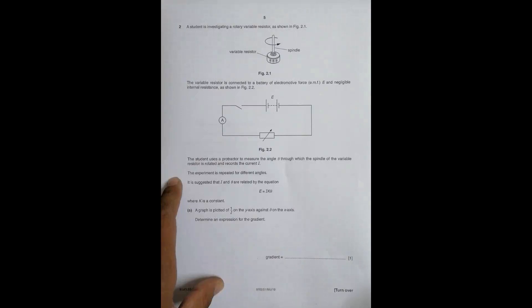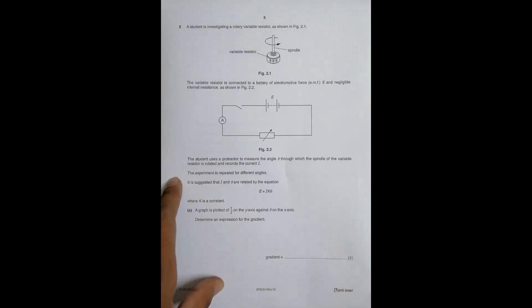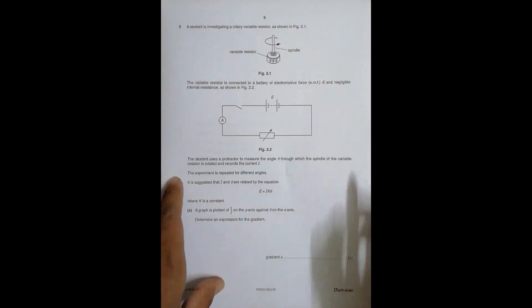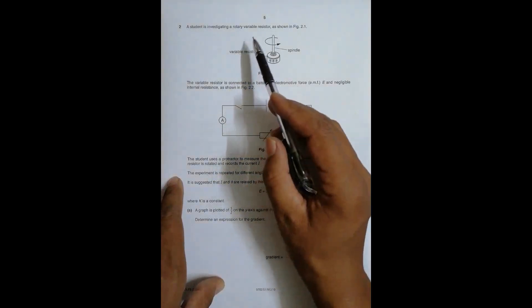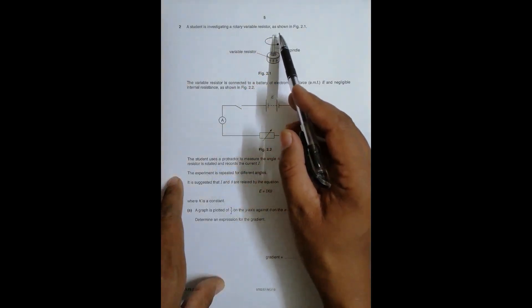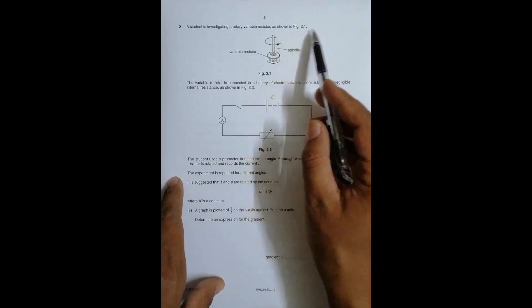Hello folks, now it's the turn of Paper 5, because our Paper 5 exam is approaching fast — it's next week. I have a done paper here: it is 2019 May/June Paper 5 Question 1, and the question number is 2. It says that a student is investigating a rotary variable resistor as shown in figure 2.1.